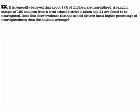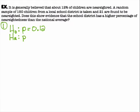First example: It is generally believed that about 12% of children are nearsighted. A random sample of 150 children from a local school district found 21 nearsighted. Does this show evidence that the school district has a higher percentage of nearsightedness than the national average? The null hypothesis is P = 0.12, and the alternative hypothesis is P > 0.12.